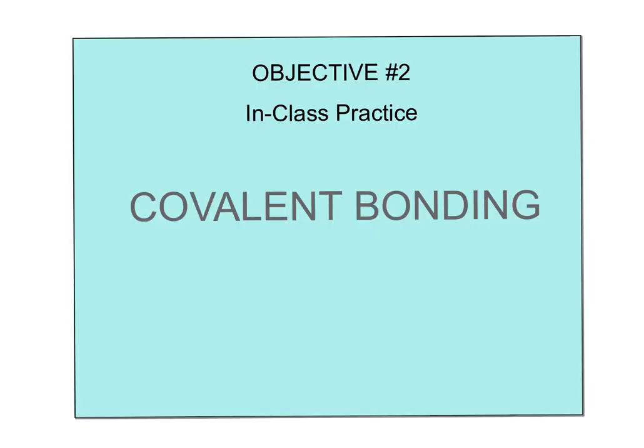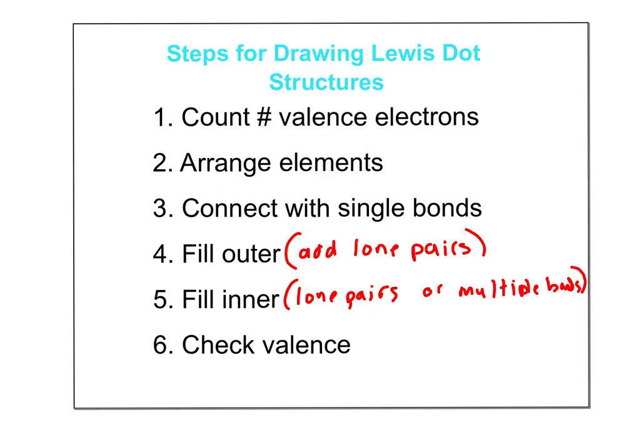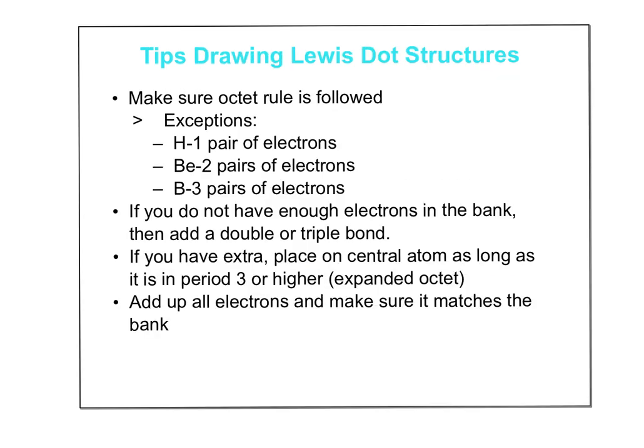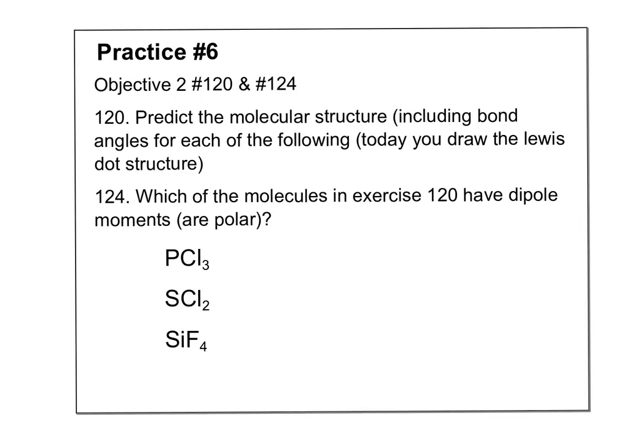Moving on to some in-class practice for Objective 2 on covalent bonding, more specifically Lewis dot structures. These are the same steps you saw in the video, so I'm not going to rehash those. We're just going to jump right into practicing, but if you did not watch the covalent bonding video, you should. And then here are some tips and tricks when you're drawing covalent bonding Lewis dot structures, again in that earlier video. For Objective 2 number 120 and 124, there's two problems kind of related. First it says predict the molecular structure. That's VSEPR, including bond angles. Today we're just going to draw the Lewis dot structure. I will teach you VSEPR tomorrow when I am back, so you'll be able to go back and add.